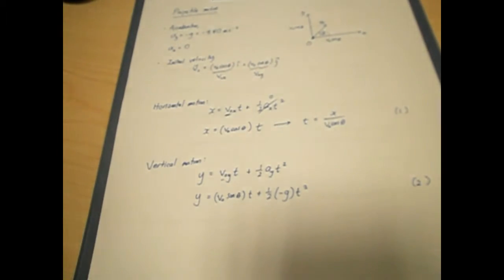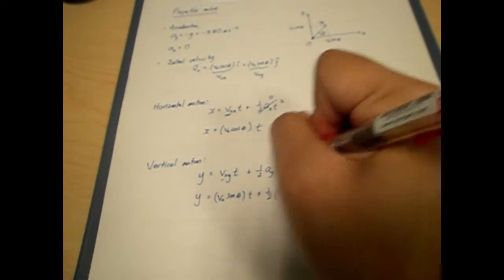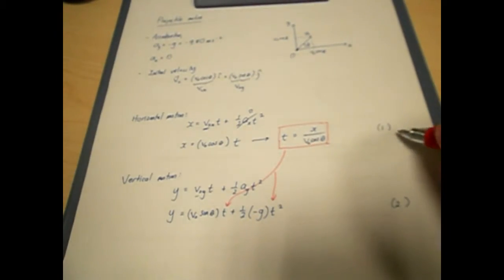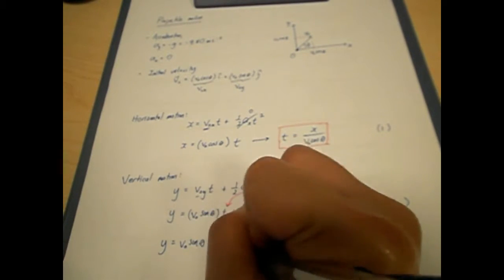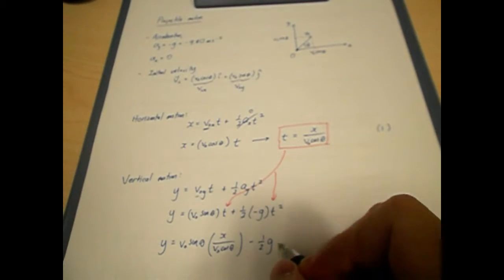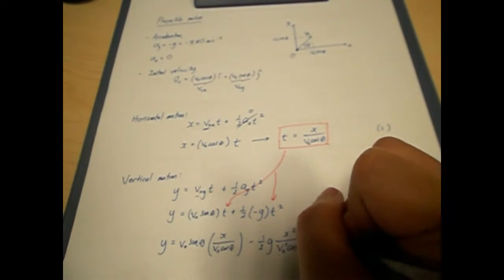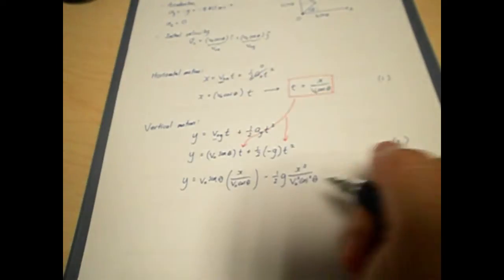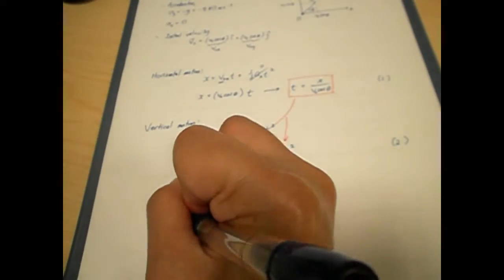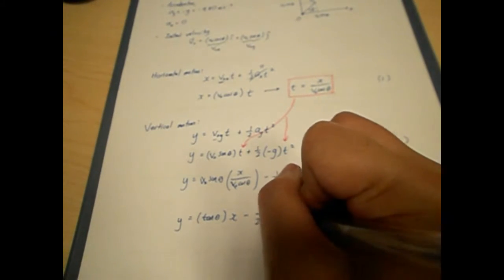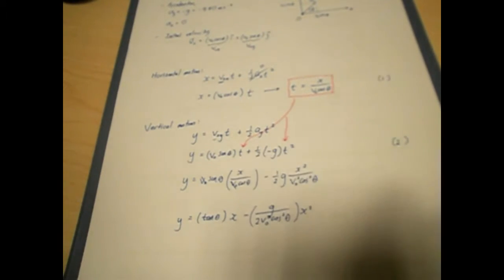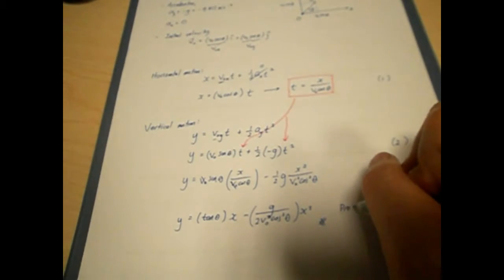This is our second equation. To derive an equation representing the path of the projectile, we substitute t — found from equation 1 — into equation 2. Substituting t = x / (V cos theta) into the y-equation: y = V sin theta · (x / V cos theta) − ½·G · (x / V cos theta)². After simplification, V0 cancels, sine over cosine becomes tangent, giving us: y = tan(theta)·x − [G / (2V²cos²theta)]·x². This is our projectile equation.